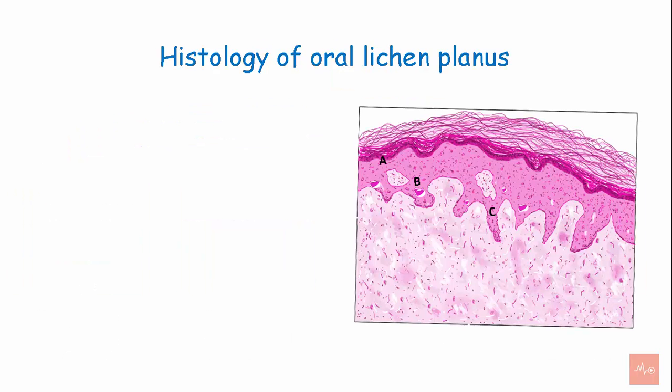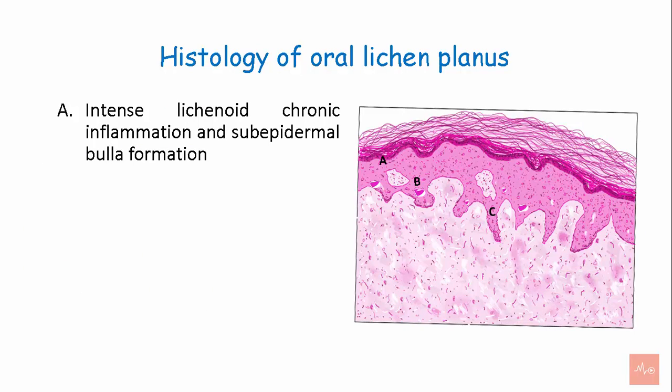Histology of lichen planus: There is intense lichenoid chronic inflammation and sub-epidermal bulla formation. Civatte bodies and a sawtooth appearance are also characteristic findings.